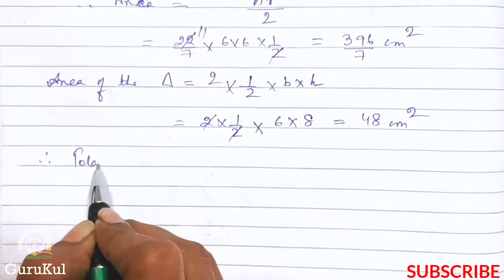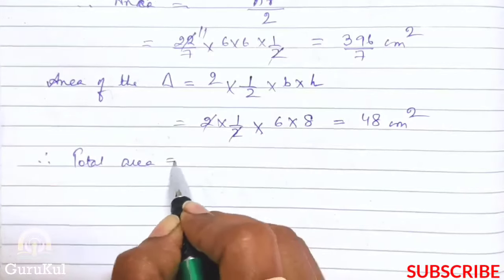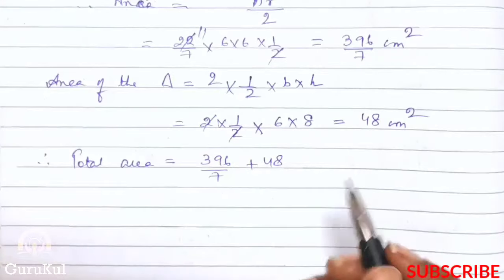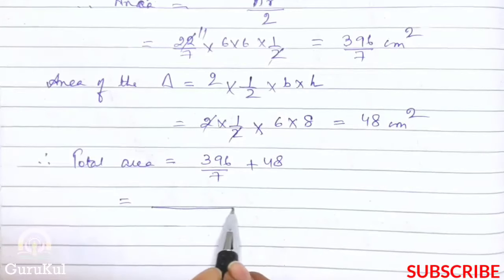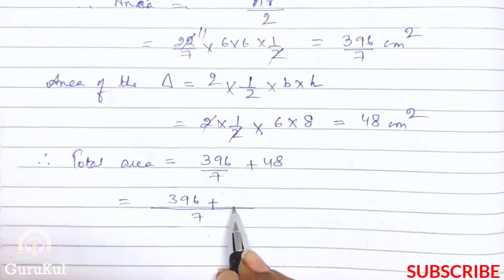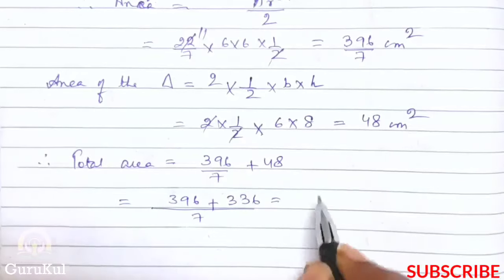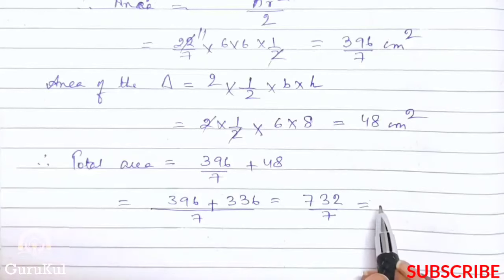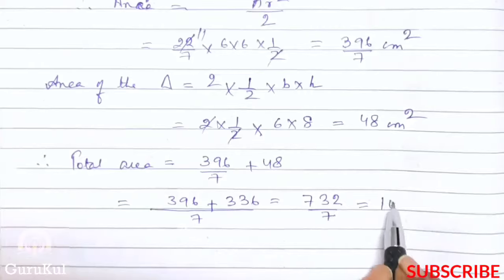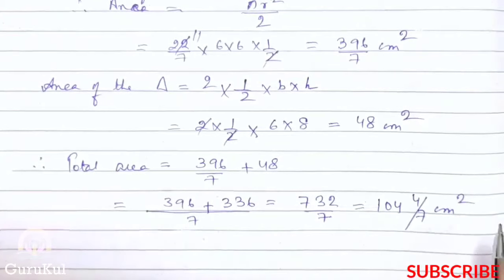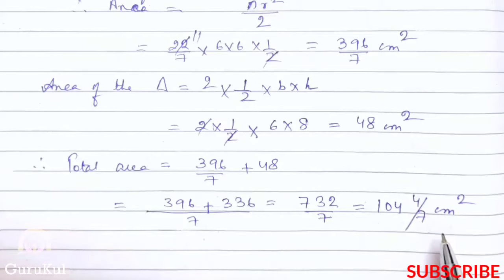Therefore total area is equal to 396 by 7 plus 48. Taking LCM: 396 plus 336 gives us 732 by 7. Writing as a mixed number, our answer is 104 and 4 by 7 centimeter square. You can leave your answer like this, or you can also write it in decimal - it will be correct.